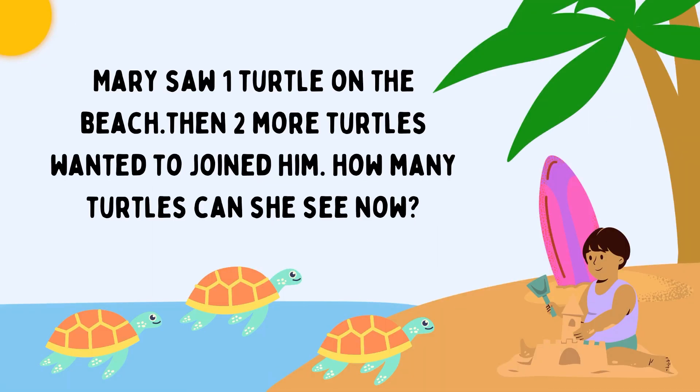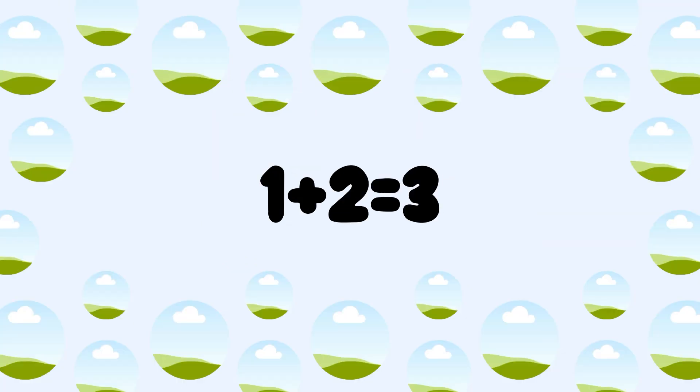Next one. Mary saw 1 turtle on the beach. Then 2 more turtles wanted to join him. How many turtles can she see now? 1 turtle plus 2 turtles. 1 plus 2 is equal to 3. Total 3 turtles.